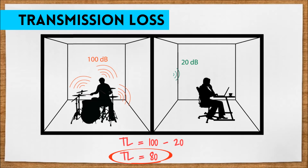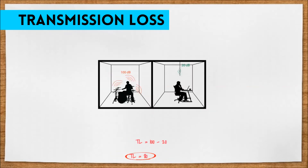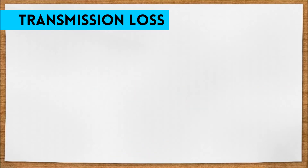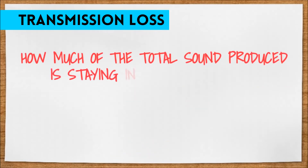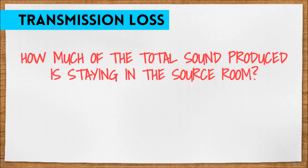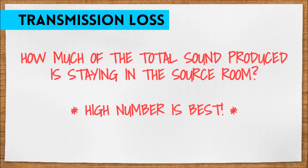The numbers can seem a little reversed at first, but once you understand it, it's easier to remember. So let's review: the TL number is basically how much of the total sound produced is staying in the source room — so we want a high number.